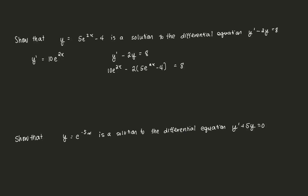Simplifying: 10e^(2x) - 10e^(2x) + 8 = 8. The exponential terms cancel, and we're left with 8 = 8. So indeed, this function is a solution to the differential equation y' - 2y = 8.